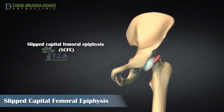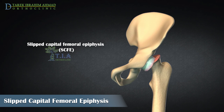The term SCFE is a misnomer. It is actually the portion of the proximal femur distal to the physis growth plate that is displaced anterolaterally and superiorly. This displacement gives the appearance of posterior and inferior displacement of the epiphysis, which in fact remains in normal position in the acetabulum.